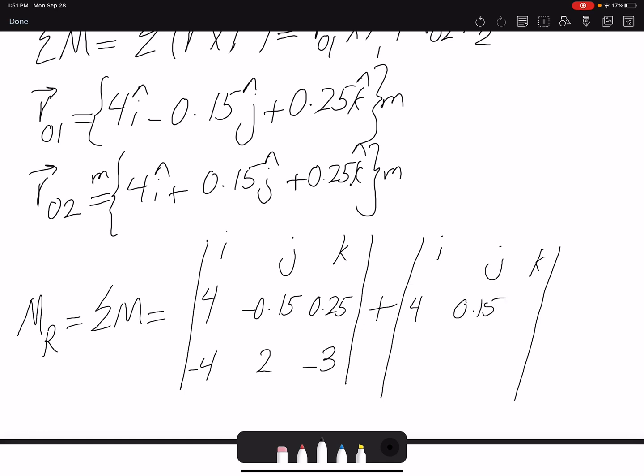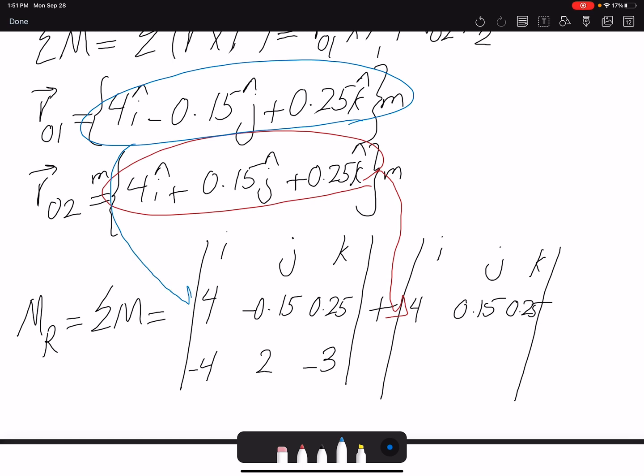Here the second row would be our position vector. 4, 0.15, 0.25. So basically I'm writing here, bringing this to this row. And bringing this position vector to this row. And the third row would be my force vector. 3, negative 4, negative 2.